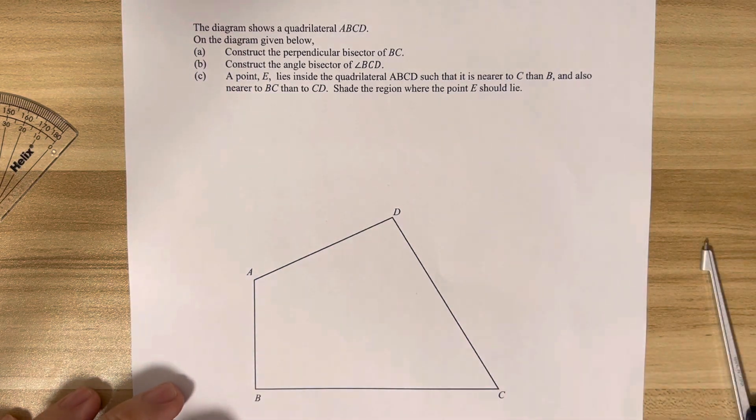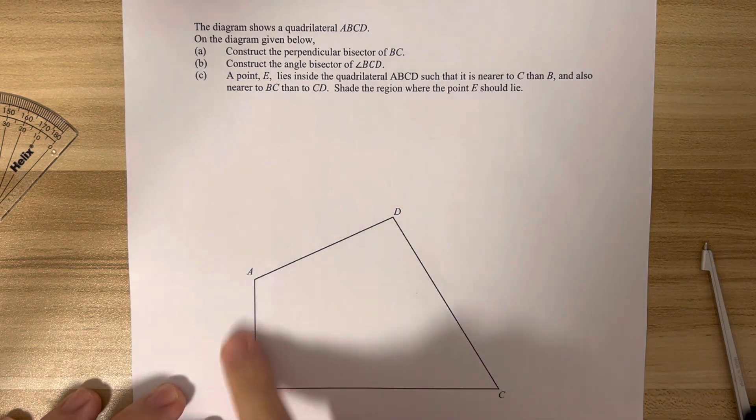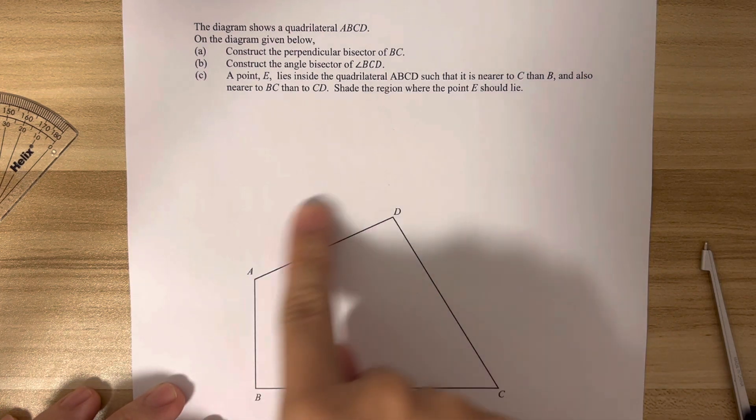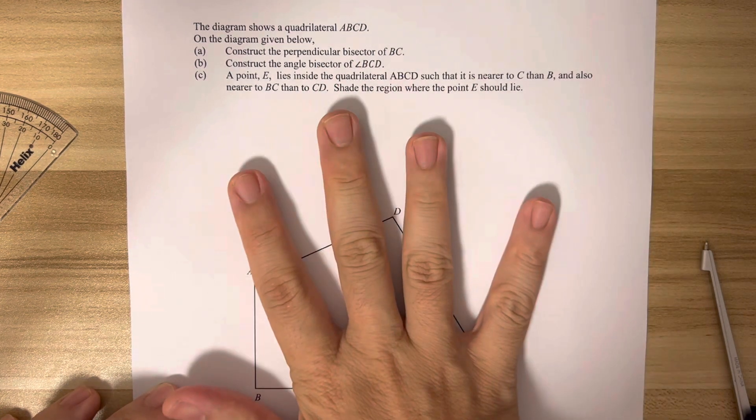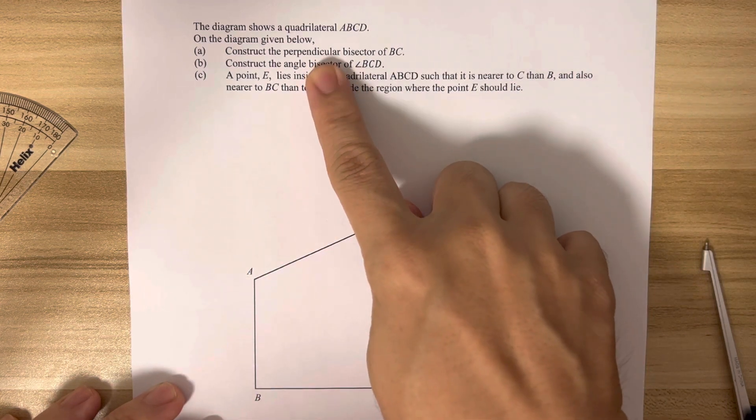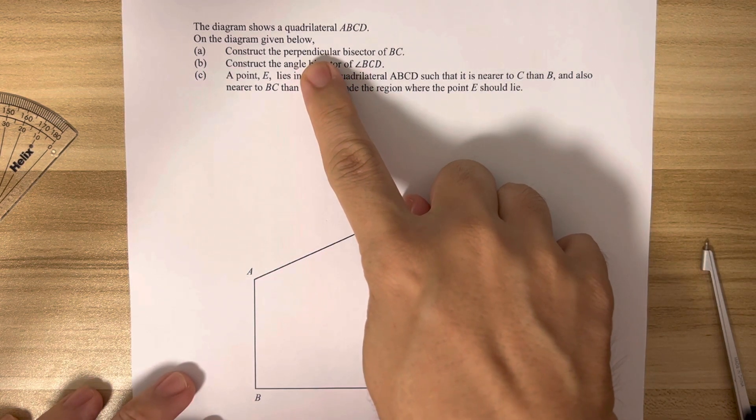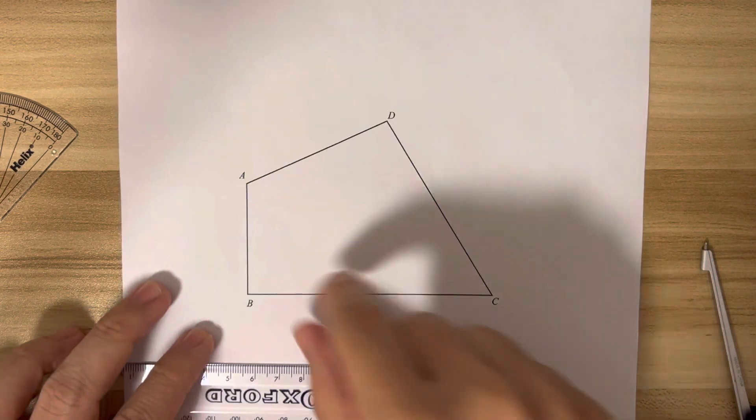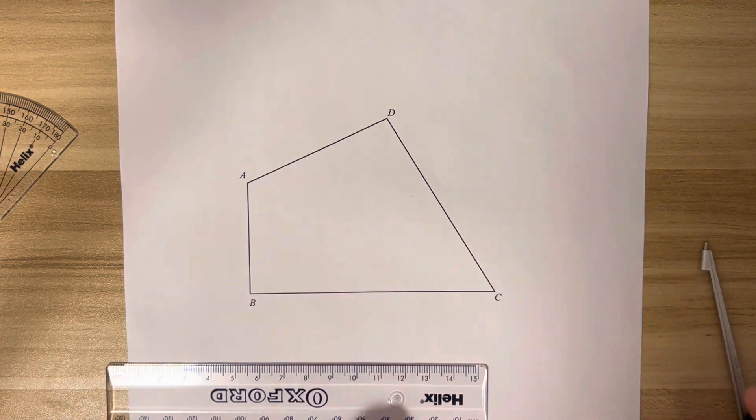Hello everyone, welcome to this video where we are given a quadrilateral ABCD. On this diagram itself, there are many things that we are going to construct. The first will be perpendicular bisector of BC, so I'm going to focus on the line BC.